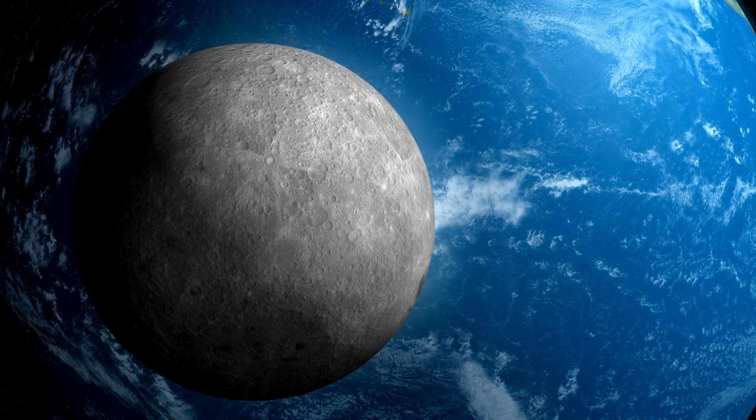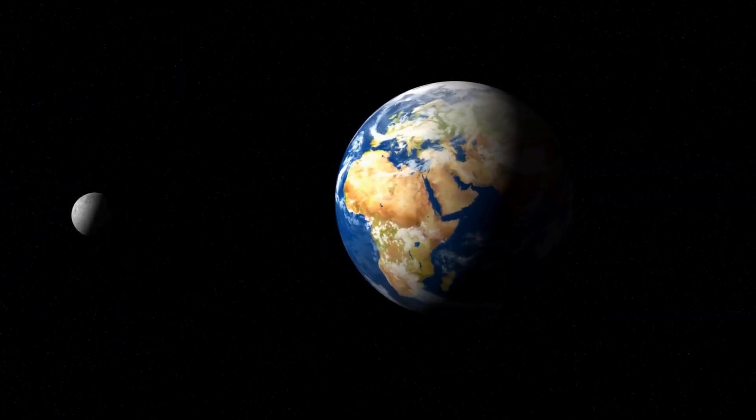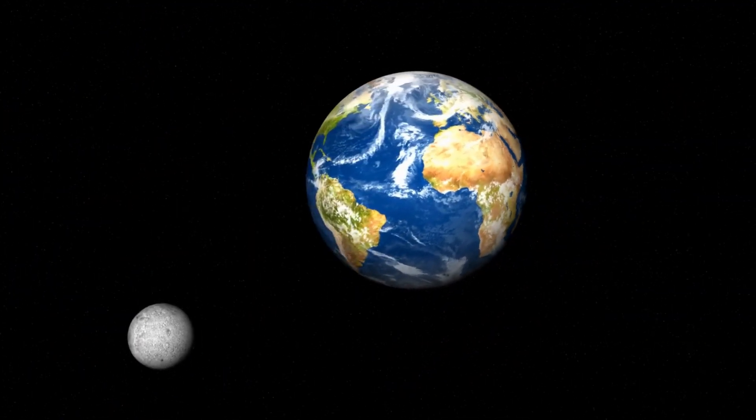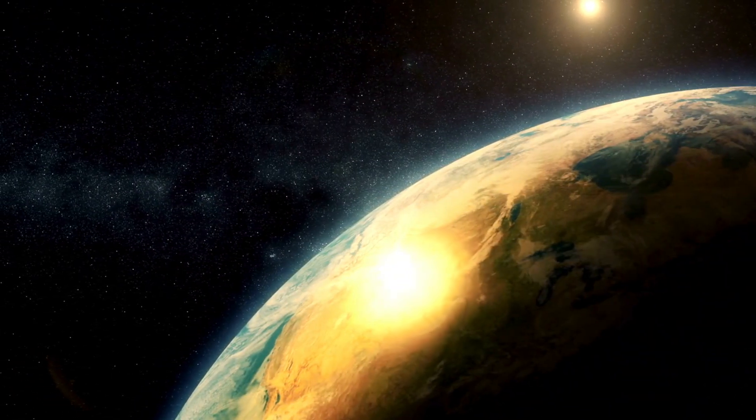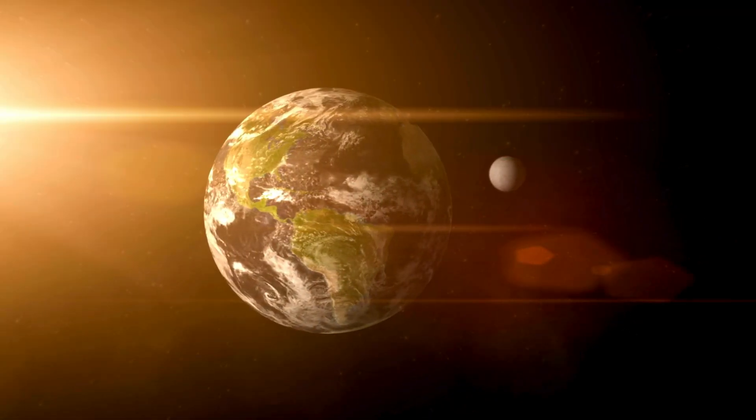Finally, there's the Moon's orbit. It's tilted relative to Earth's equator, which fits perfectly with the idea of a colossal sideways impact. If the Moon had formed quietly alongside Earth, its orbit would likely be aligned differently.